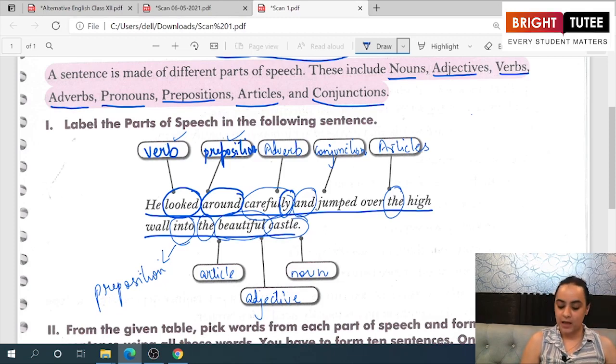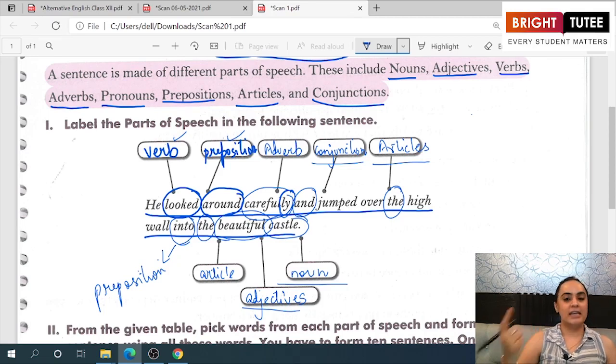Conjunctions are those words which help you join two or more sentences. Then we have articles—three articles: A, An, The. Another preposition I have told you. Adjectives are describing words—those words which describe a noun or a pronoun. And then we have a noun—a naming word, name of a place, person, animal, or thing. These are the different parts of speech that every sentence has.